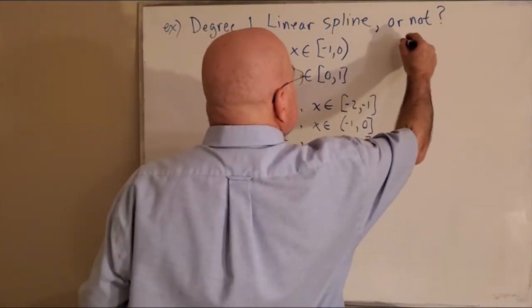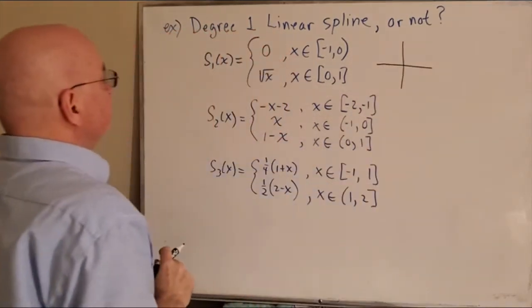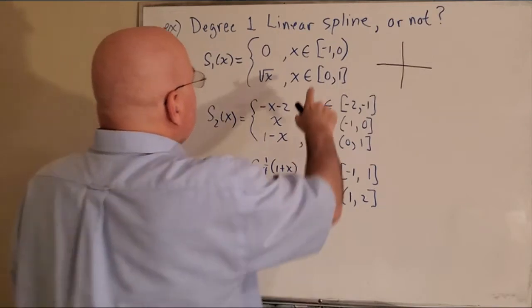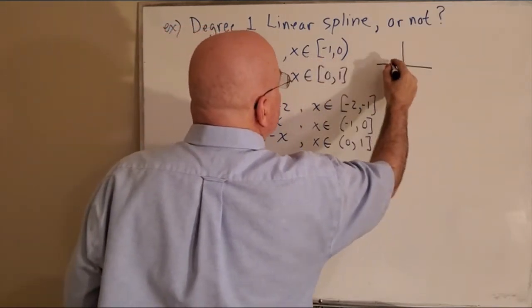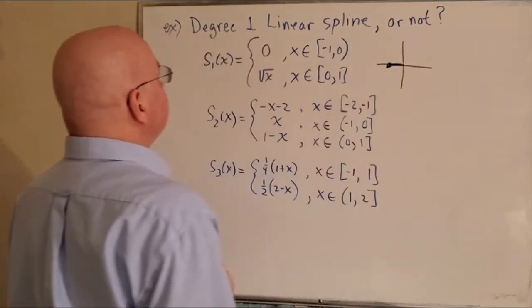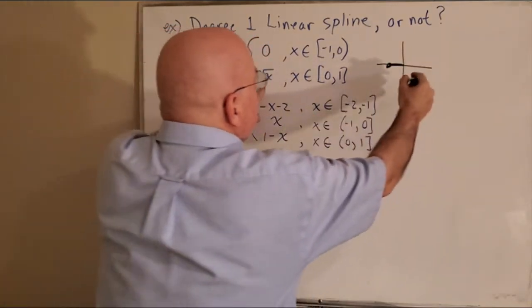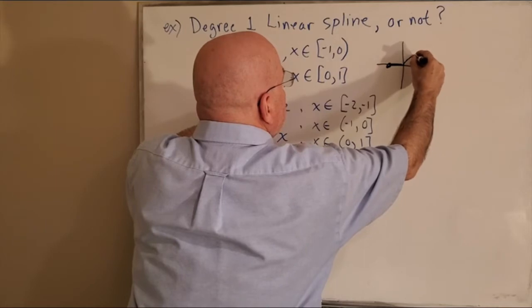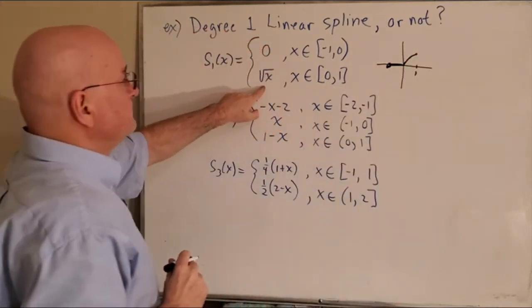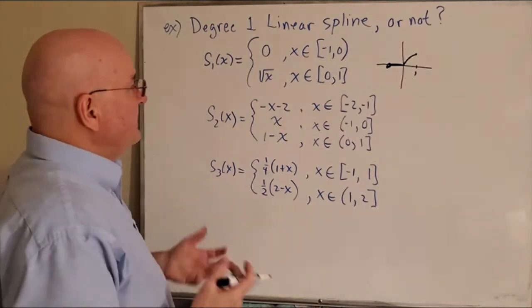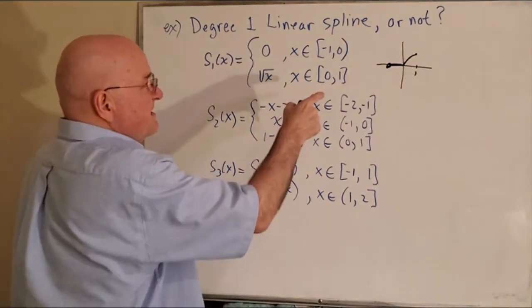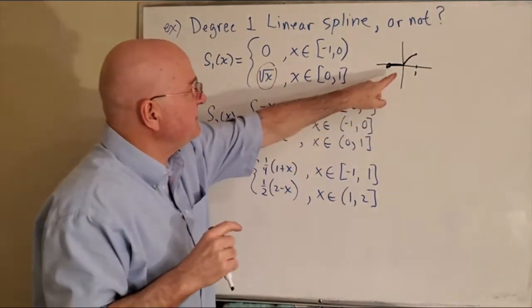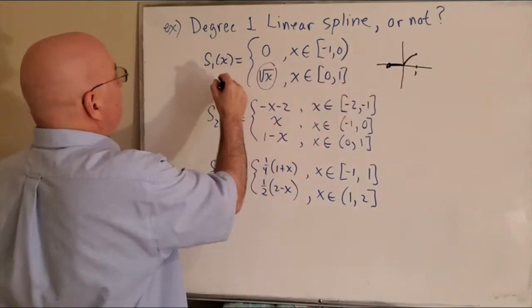Well, I'm gonna graph that - I don't even have to graph it, do I, for the first one? But I will. Okay, from negative one to zero it's that, and then between zero and one it's the square root of x, which looks like that. It's continuous. See, I didn't even have to draw that, did I? It's not linear because that's not producing a line segment. It's a curve, right? It's not a straight line connecting (0,0) to (1,1). So no, not a degree one spline.